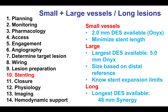Moving on to stenting, the smallest stent currently available in the United States is a 2.0 mm Onyx stent. In general, the length of the stent should be minimized to reduce restenosis risk. When it comes to larger vessels, the largest is the 5.0 mm Resolute Onyx. Sizing should be based on the distal reference — if there is an aneurysmal segment, it should be based on the distal reference and not on the size of the aneurysm. For long lesions, there are now longer stents available, including a 48 mm Synergy drug-eluting stent.